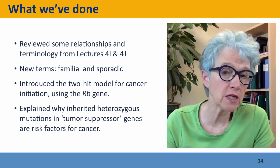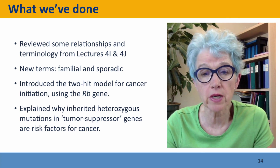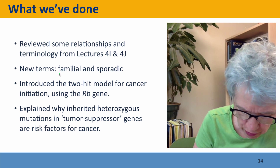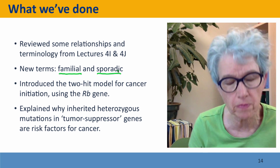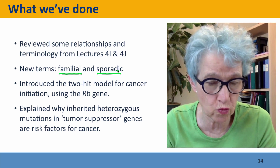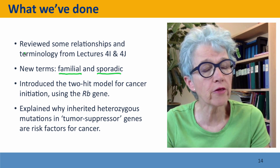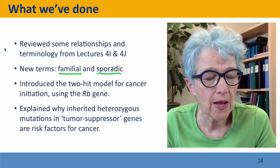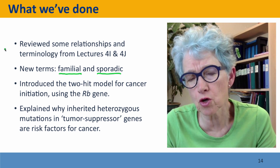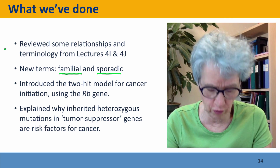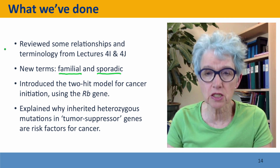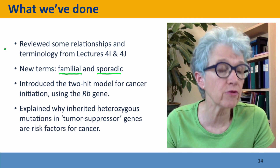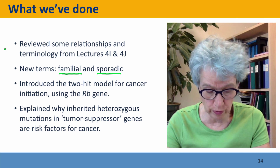We've reviewed some relationships and terminology first introduced in Module 4, and we've introduced two new terms: familial and sporadic. These terms don't just apply to cancer risk — they can also apply to other genetically specified phenotypes, especially ones where there's incomplete penetrance. Remember the term penetrance from Module 4: in some cases, individuals inherit a genetic predisposition to a trait, and in other cases it arose spontaneously by a new mutation.